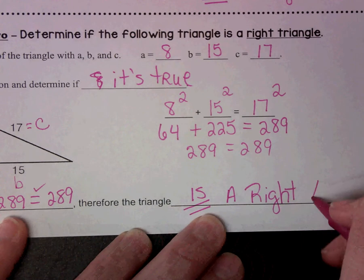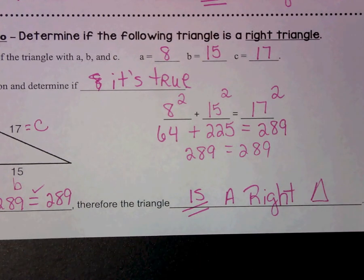And so that's it. That's exactly how we prove or use the Pythagorean Theorem's Converse to determine if it's a right triangle.